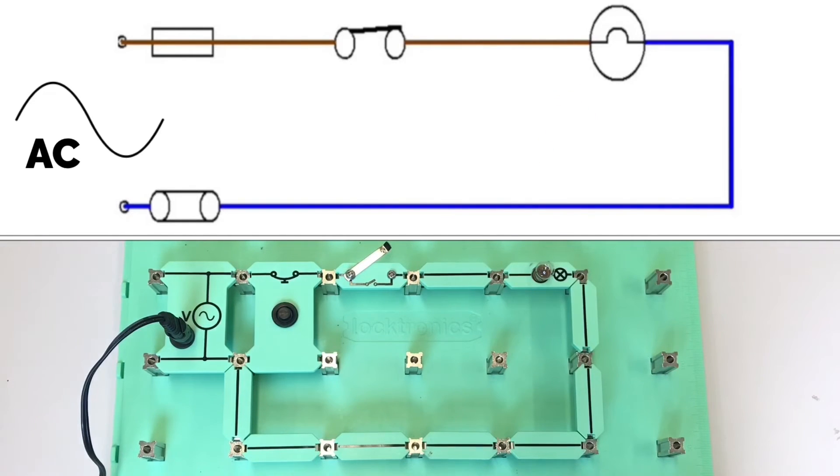Therefore, in the current situation in the top diagram, with the switch being closed, the lamp would be illuminated and would be turned off by simply operating the switch.